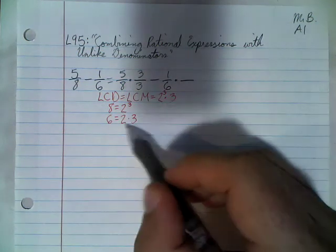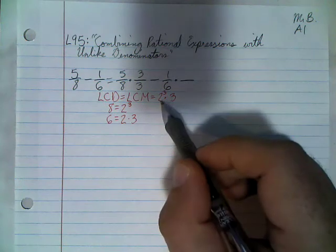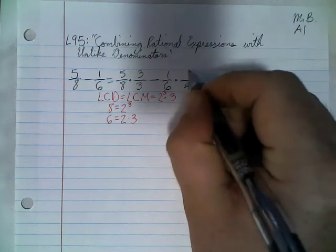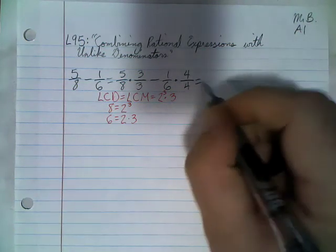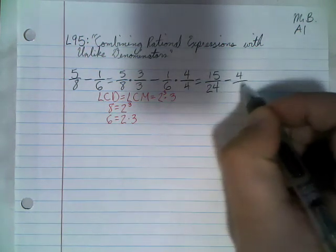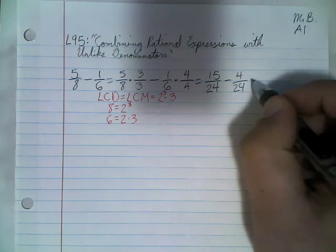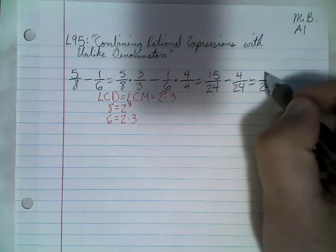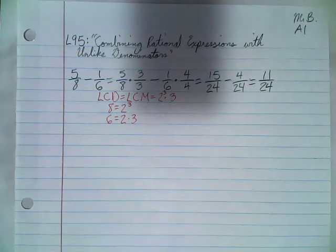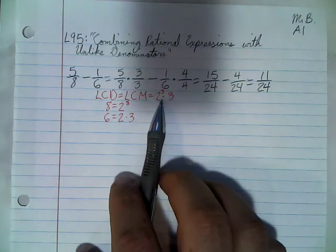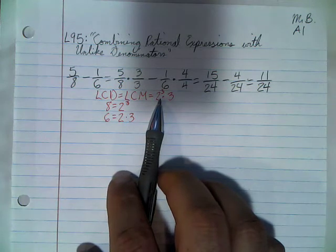For 1/6, it already has a 2 and a 3, so I need 2 more 2s — and 2 times 2 is 4. Simplifying, I get 15/24 minus 4/24. Once we have a common denominator, the denominator stays the same — still 24ths — and now we're ready to subtract the numerators: 15 minus 4 is 11. So the answer is 11/24.